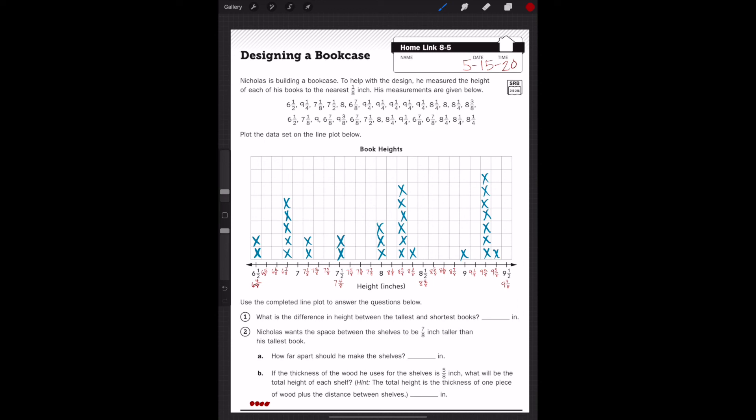Let's take a look at these questions. It says, use the completed line plot to answer the questions below. Number 1, what is the difference in height between the tallest and shortest books? If you think about what that word difference means, what does it tell us to do? If you are thinking it tells us to subtract, you are correct. Very good. So in this problem, number 1, we are going to need to subtract to find our answer.